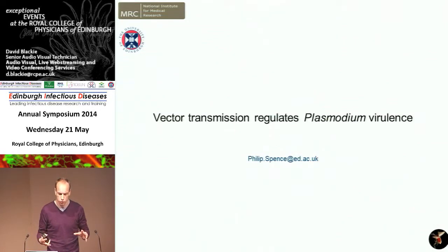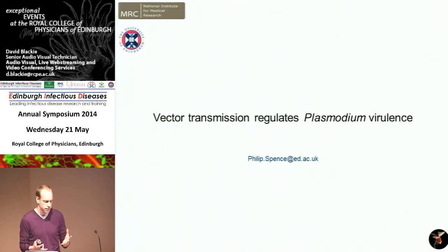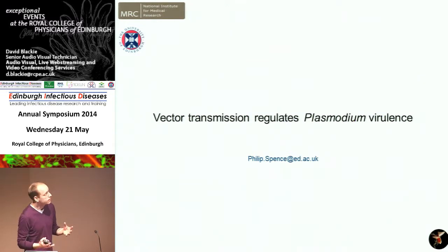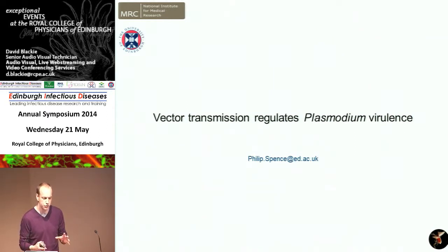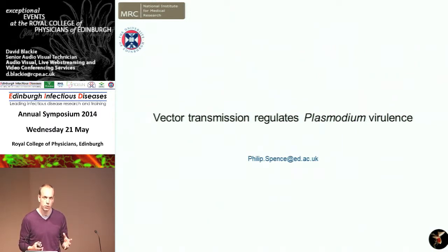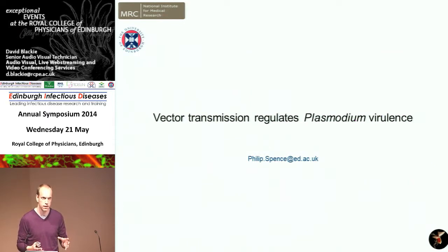We're really interested in two broad questions. The first is what regulates the virulence of plasmodium, and the second question is what constitutes effective immunity to malaria. What we have shown is that the mosquito vector is the master regulator of both. By controlling parasite virulence and host immunity, it's the mosquito which dictates the outcome of infection.